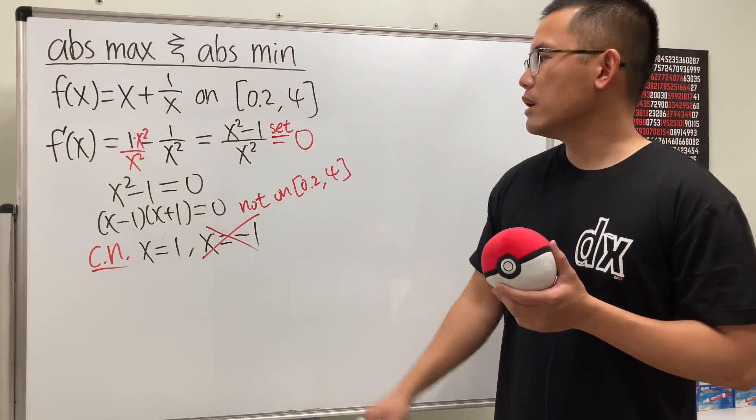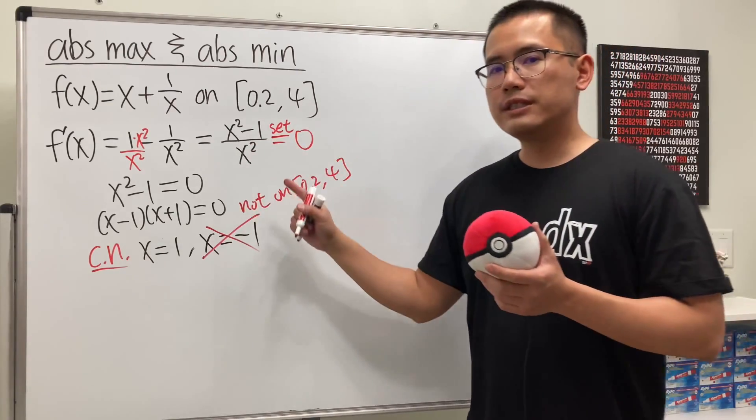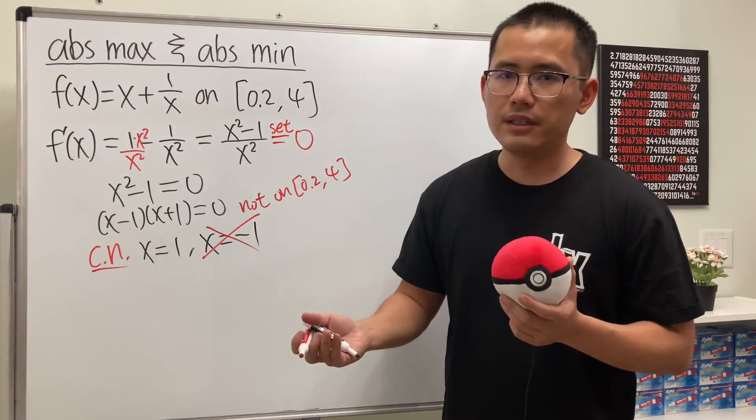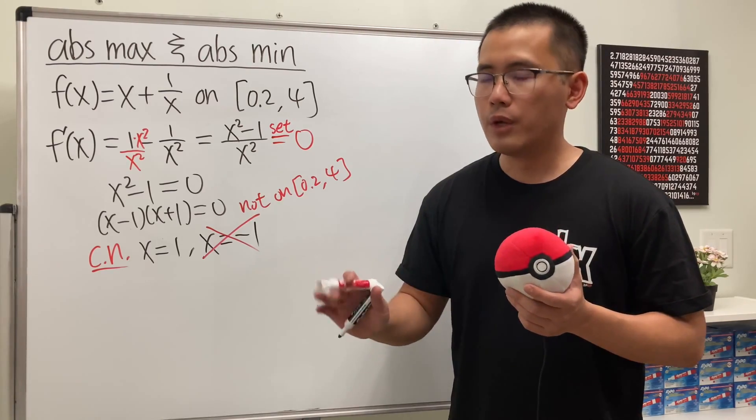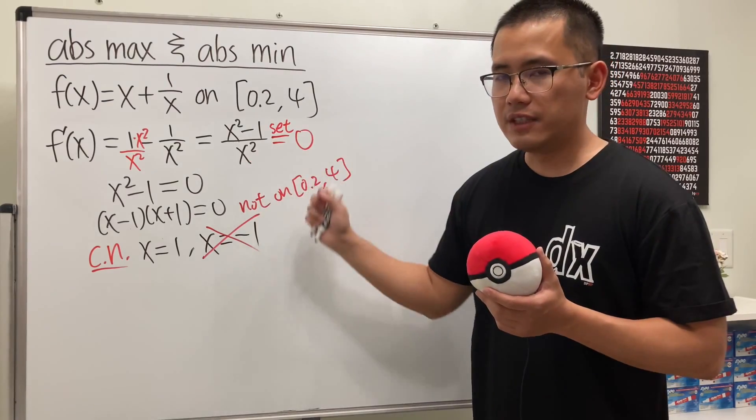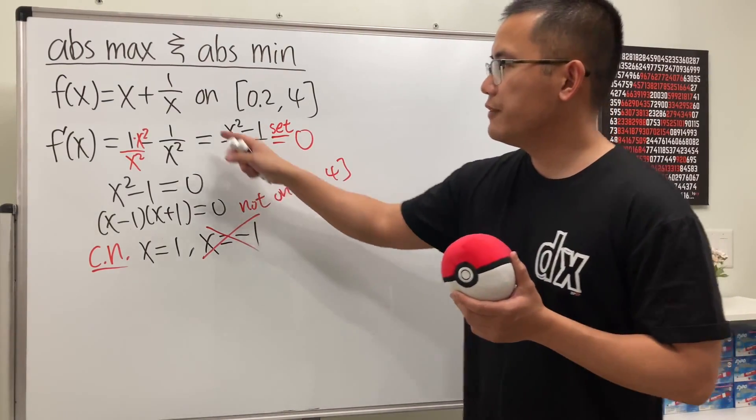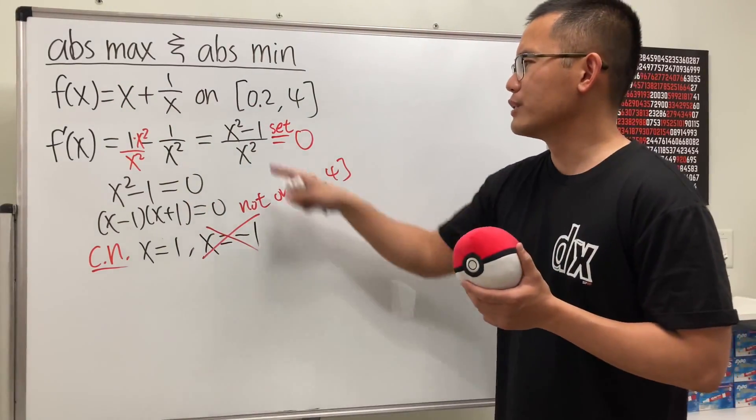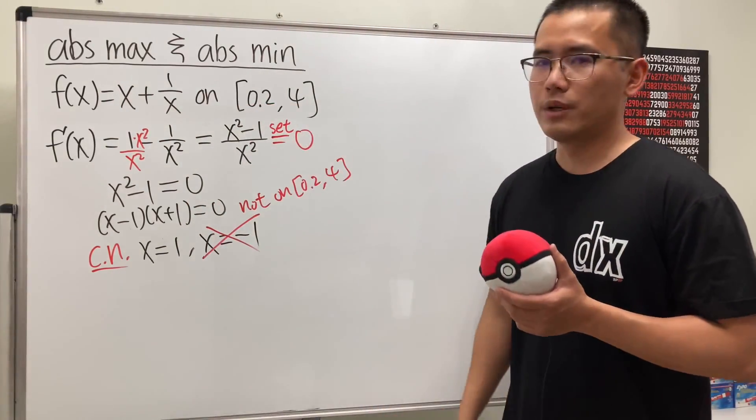And you might also be wondering, do we need to set the bottom to be 0 to find out where the derivative is undefined? No, because when x is 0, yes, that will make the derivative undefined, but 0 is not even in the domain of the original function. And another reason is, of course, 0 is not on this interval. So don't worry about it.